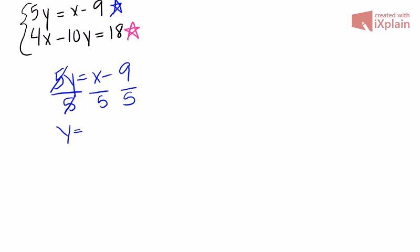We get y equals one-fifth x minus 9 over 5. You want to make sure that your fractions are in the most simple format.